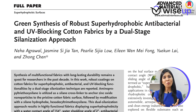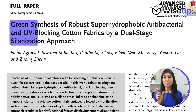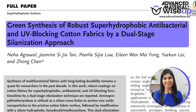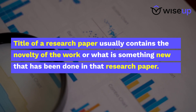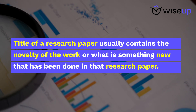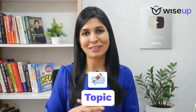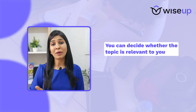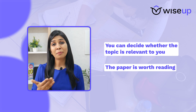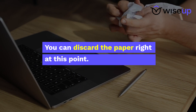So without further delay, let's get started. When you open a research paper to read, the first thing you should read is the title. The title usually contains the novelty of the work — what is something new that has been done — and it also covers the topic on which the research paper is based. Just by reading the title you can decide whether the topic is relevant to you, or if it's not relevant you can discard the paper right at this point.